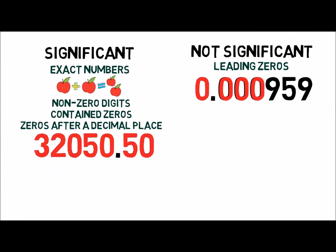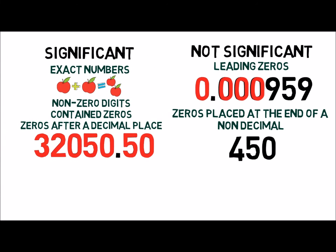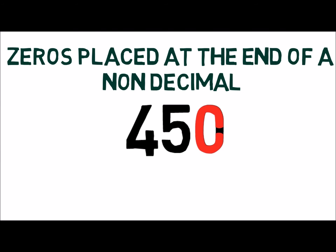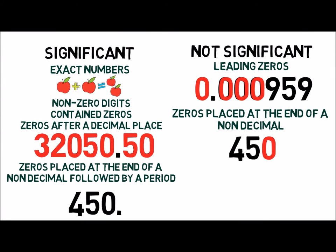Zeros placed at the end of a number, a non-decimal, are generally placeholders. If, however, the number is a measured quantity, a period is placed at the end of the number.